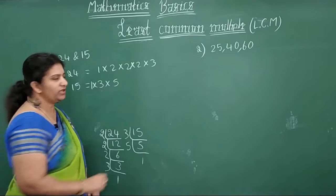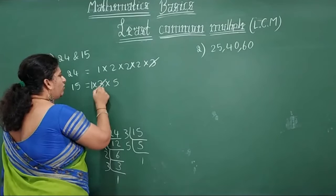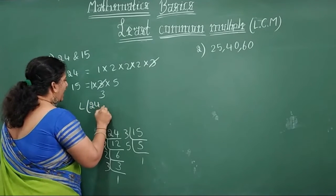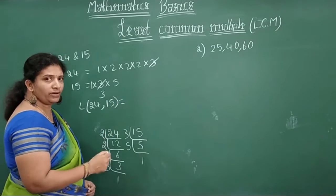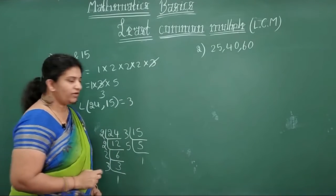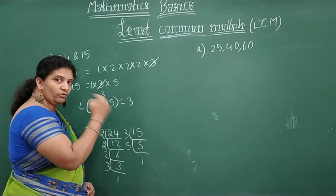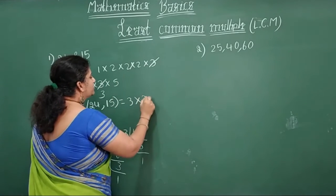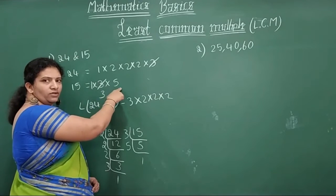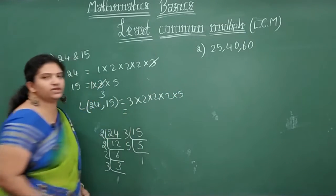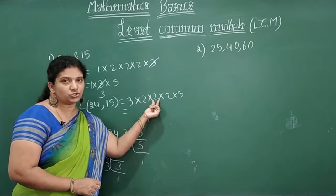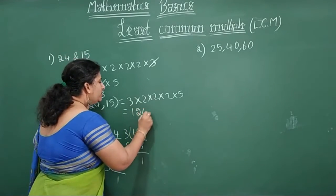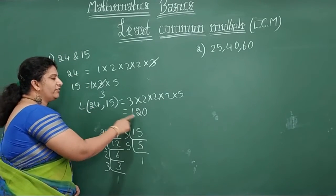Now check which factors are common between 24 and 15. Any common factor you find, write it once — that is the HCF. For LCM, write the common factor once and then include all remaining factors. Other than 3 (the common factor), 24 has 2 × 2 × 2 remaining, and 15 has 5 remaining. So LCM = 3 × 2 × 2 × 2 × 5 = 3×8×5 = 120. The LCM of 24 and 15 is 120.